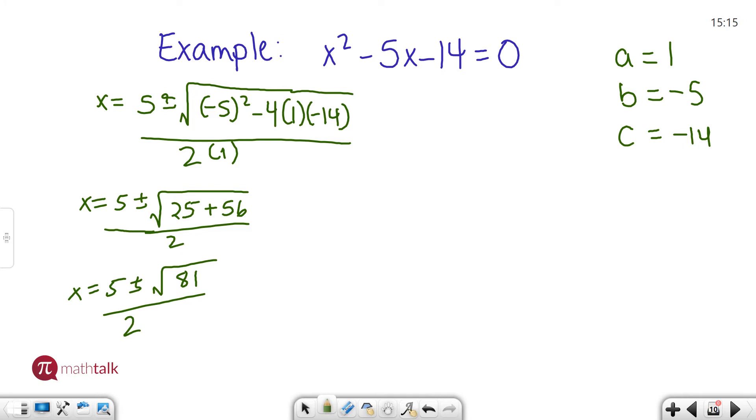Let's keep going. I'm going to go up to the next column over here. x equals 5 plus or minus. The square root of 81 is 9. And then all over 2.